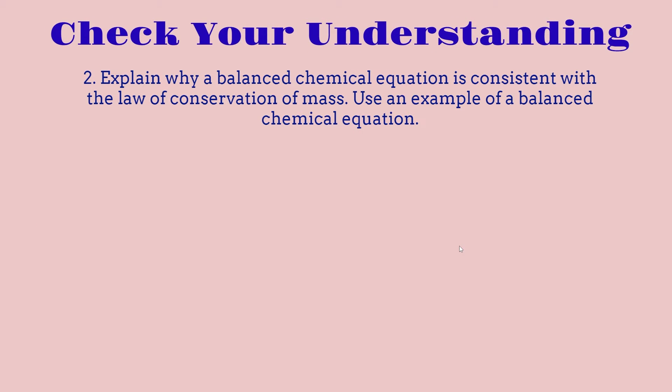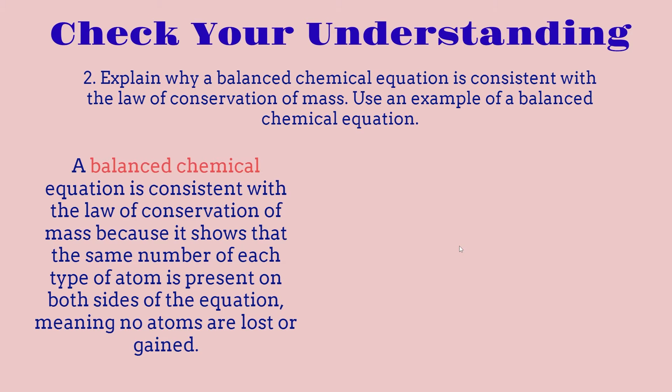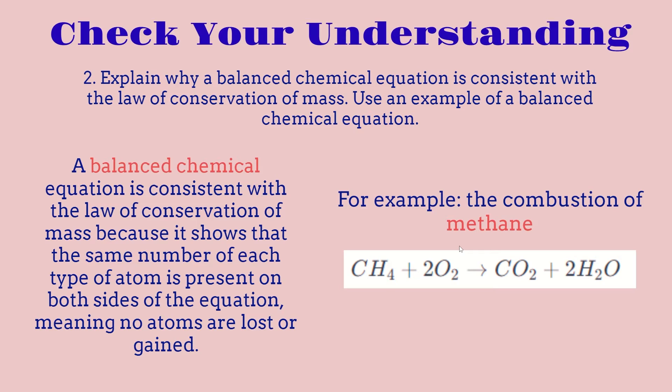For question number 2, explain why a balanced chemical equation is consistent with the law of conservation of mass, and also use an example. A balanced chemical equation is consistent with the law of conservation of mass because it shows that the same number of each type of atom is present on both sides of the equation, meaning that no atoms are lost or gained. The example we're using is the combustion of methane.